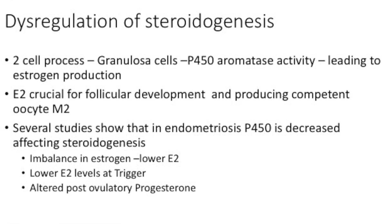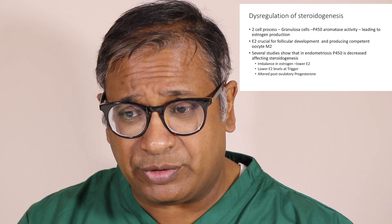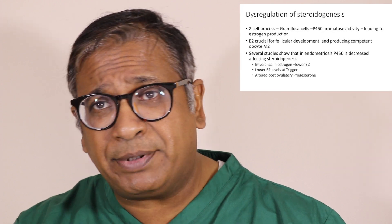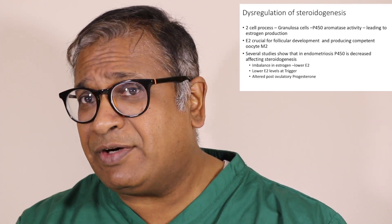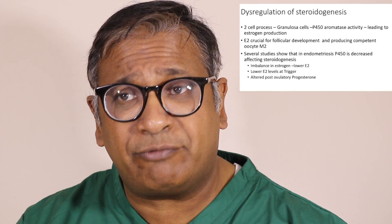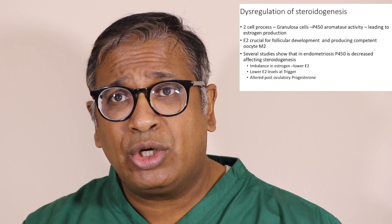Let's go to steroidogenesis. What does an oocyte require? It requires an increasing amount of oestrogen — it's a two-cell process. The granular cells under aromatase activity start producing more oestrogen. This is crucial for follicular development and leads to a competent metaphase 2 oocyte — called an M2 oocyte — which can be fertilized. Several studies have shown that aromatase P450 is decreased, affecting steroidogenesis. You see lower levels of oestrogen in endometriosis, lower oestrogen levels at trigger, and an altered post-ovulatory progesterone. So it clearly seems that endometriosis affects steroidogenesis.